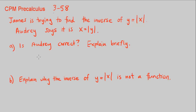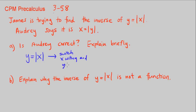When we start with any function like y is equal to the absolute value of x, one way to find the inverse is to switch the x and y variables. Switch x with y and y with x. Basically, everywhere we see an x, we write a y, and everywhere we see a y, we write an x. So in place of y here we write x, and in place of x here we would write y.